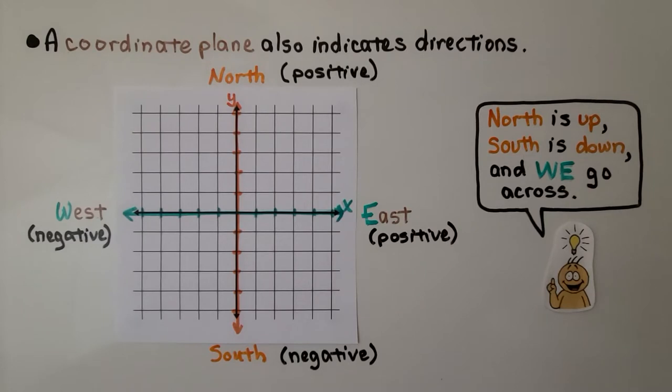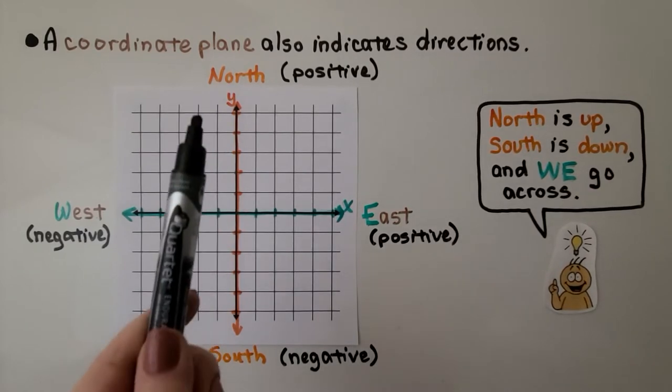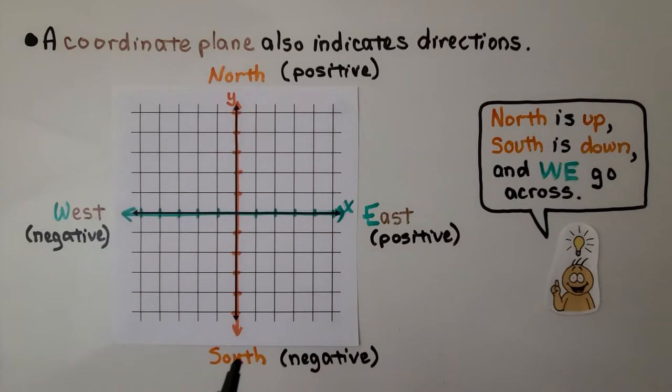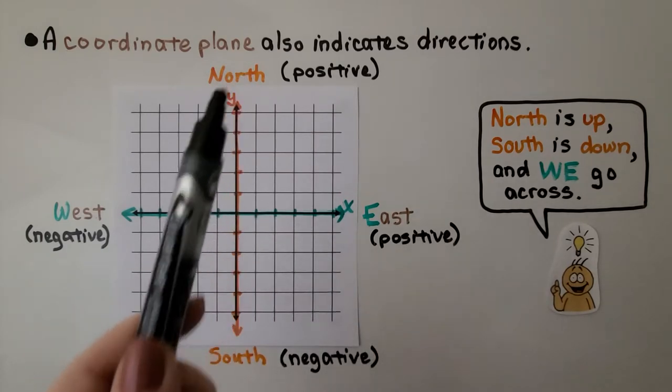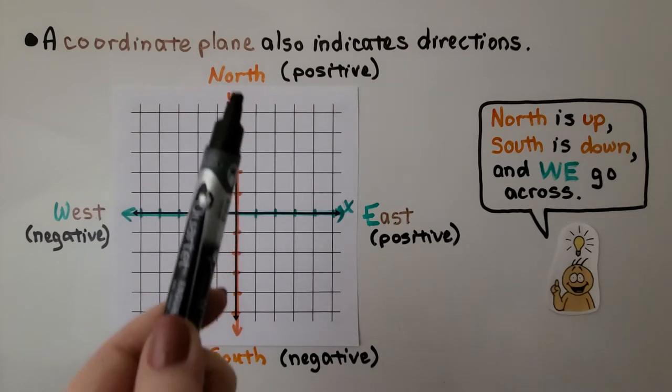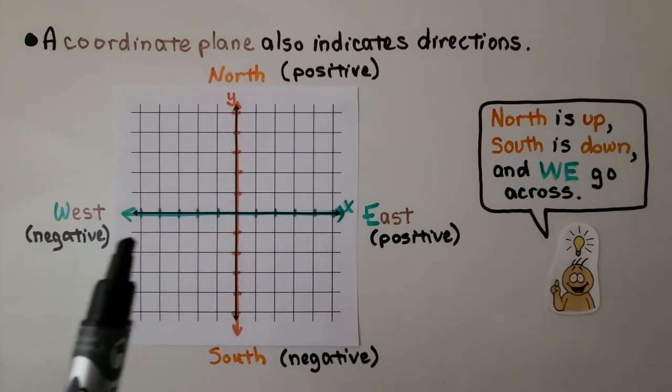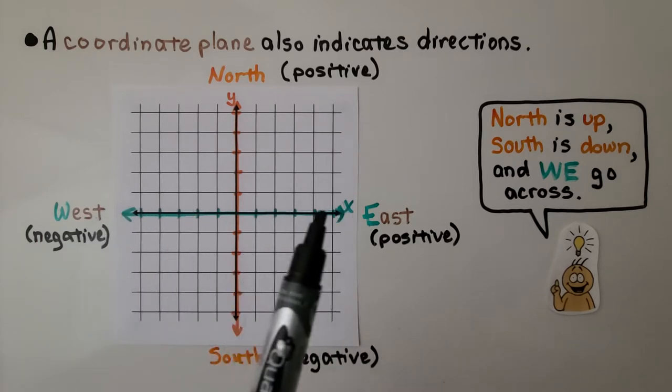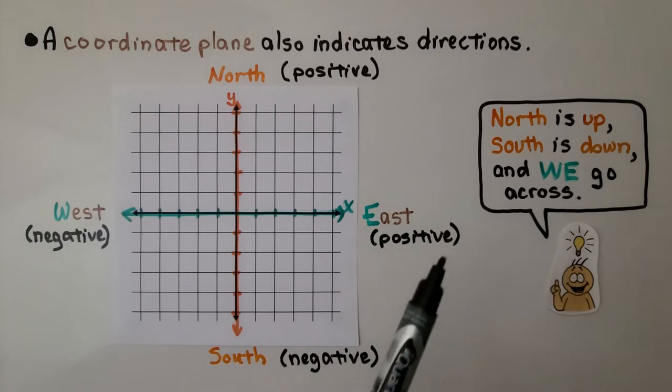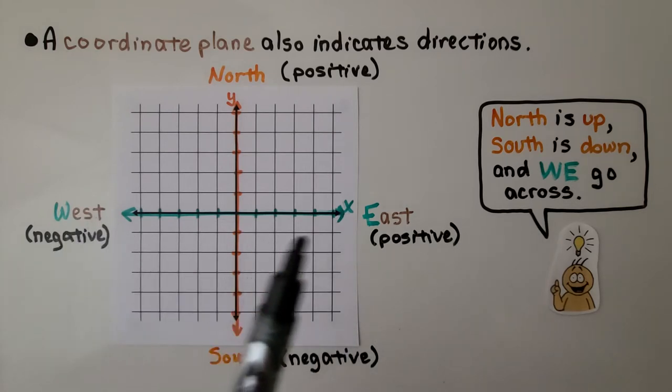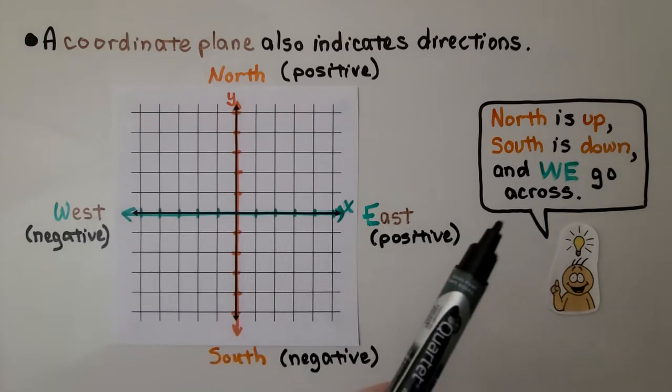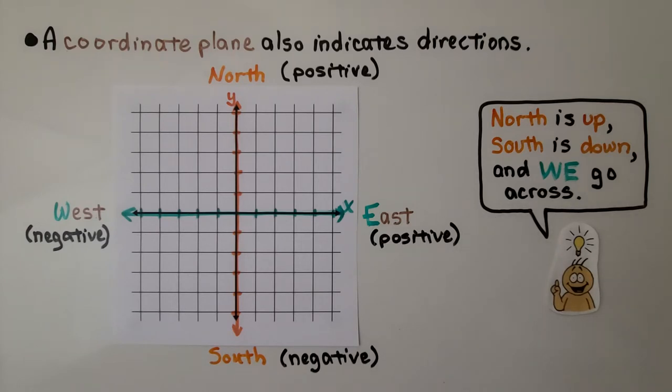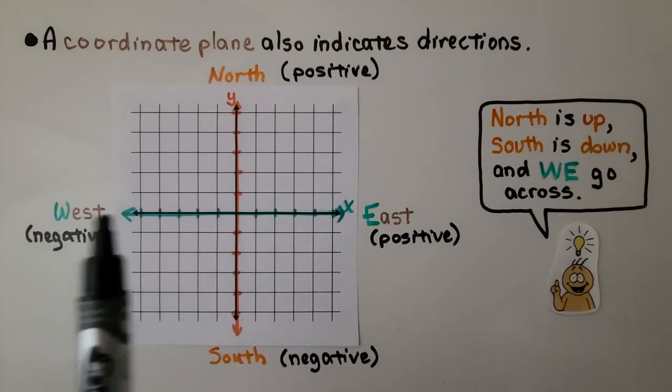A coordinate plane also indicates directions. We have this as north, here's south, here's west, and here's east. This would be positive numbers, this would be negative numbers. I've always taught that you can remember which is west and which is east, because we can remember north is up, south is down, and we go across. So, we have W, E, we go across.